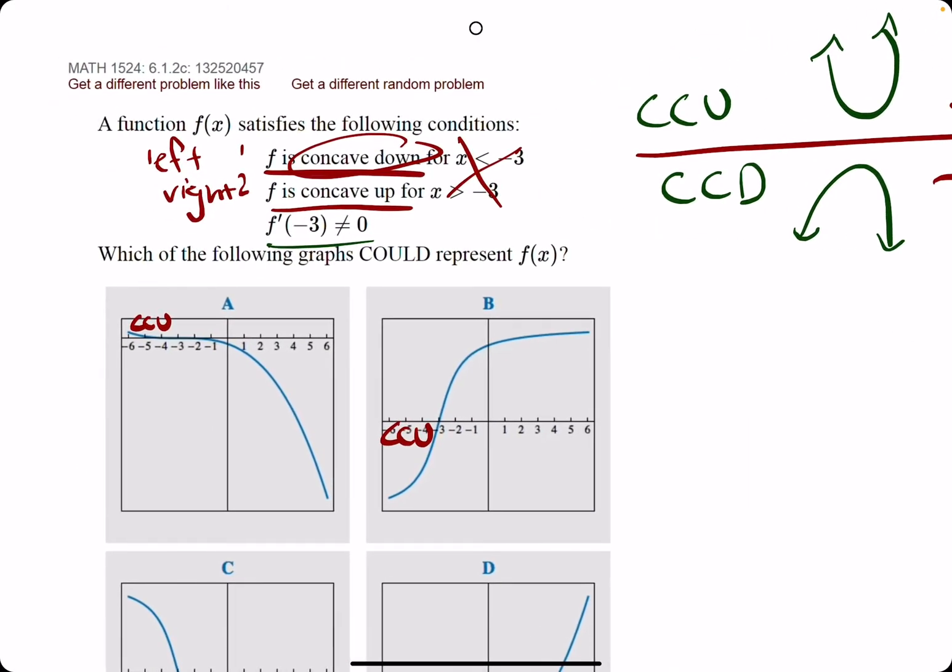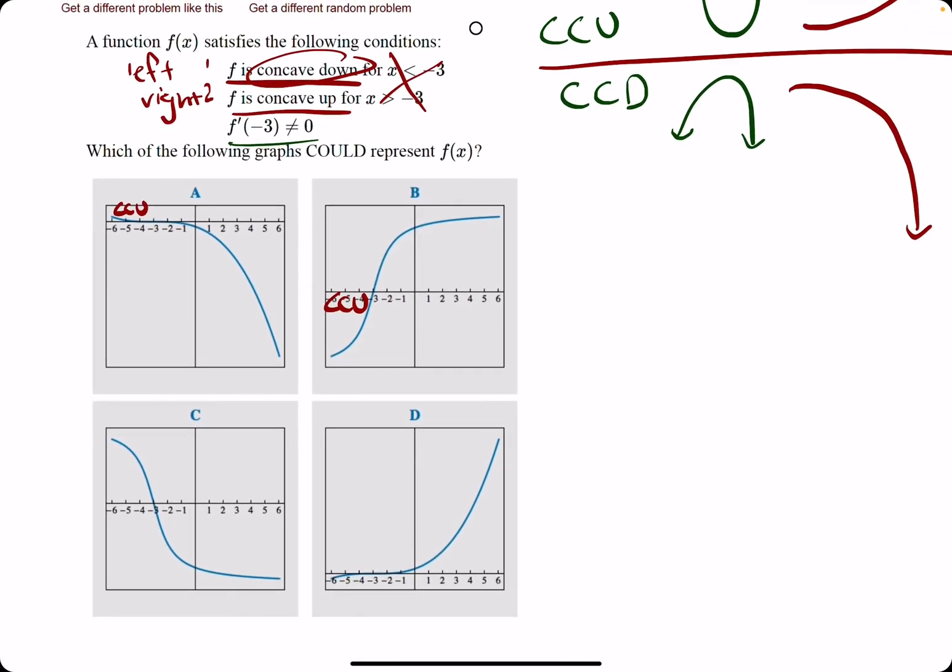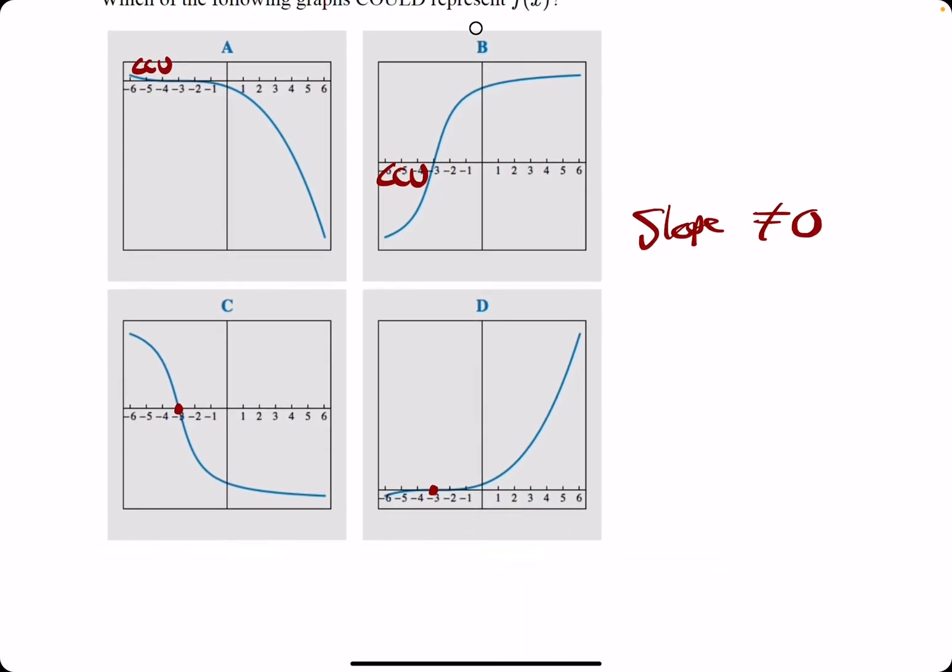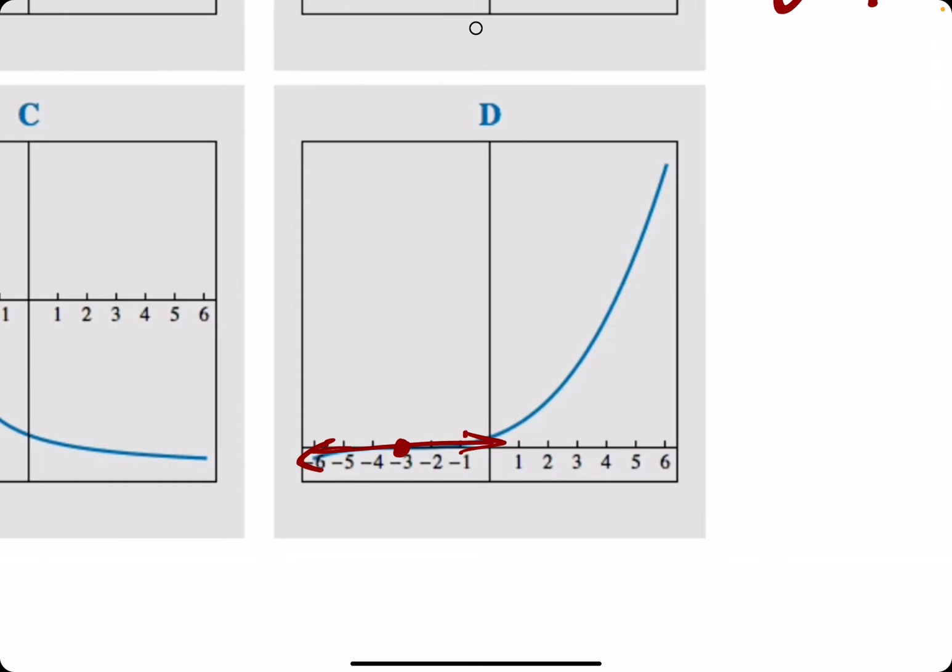f prime of negative three cannot equal zero. What does this mean? This is saying the derivative at negative three cannot be zero. What does it mean for the derivative at negative three to not be zero? Derivative just means slope. So they're saying the slope cannot be equal to zero. The slope of zero looks like it does here in option D. The slope at negative three is zero because it's flat.